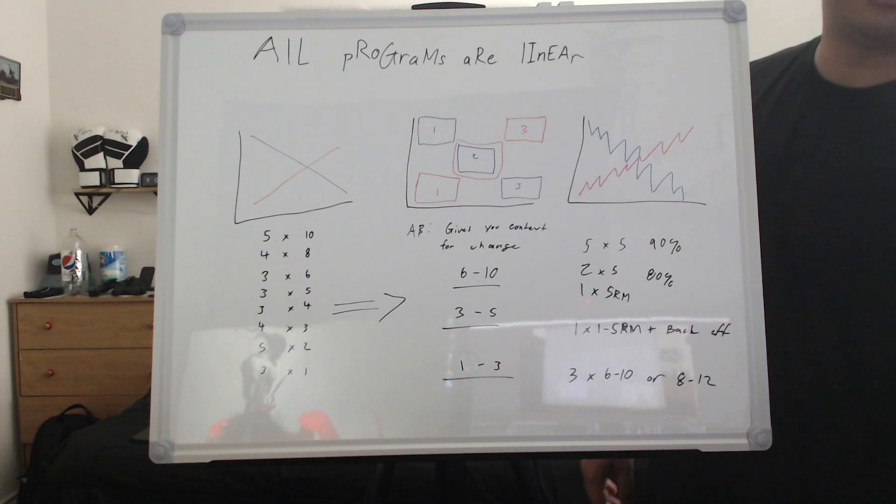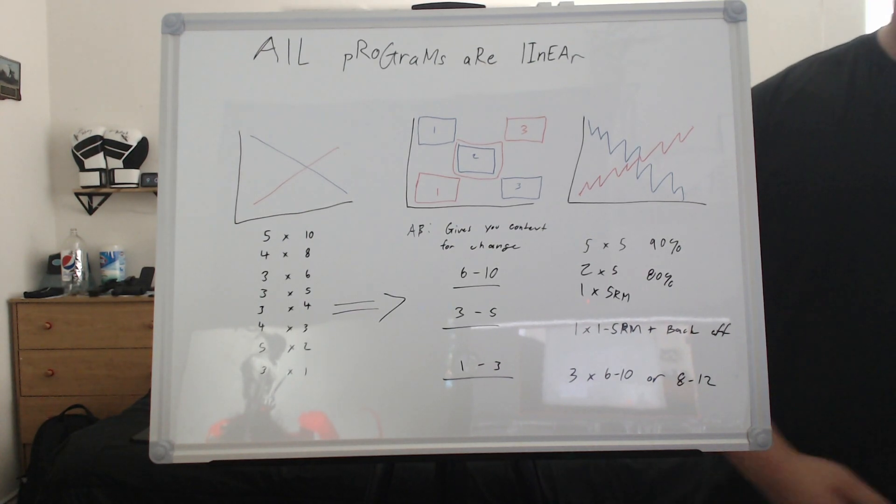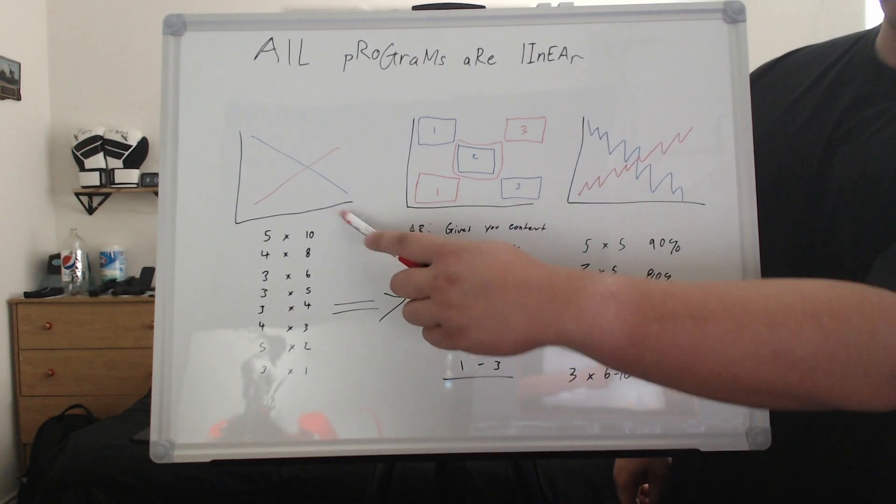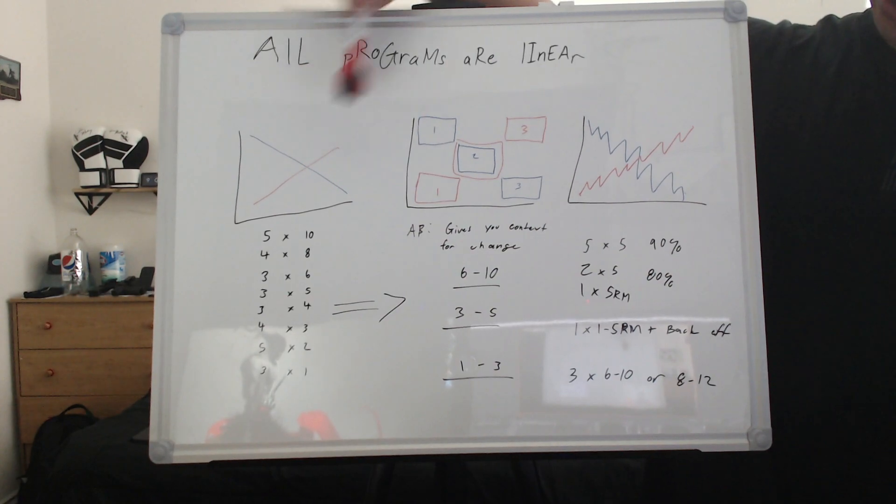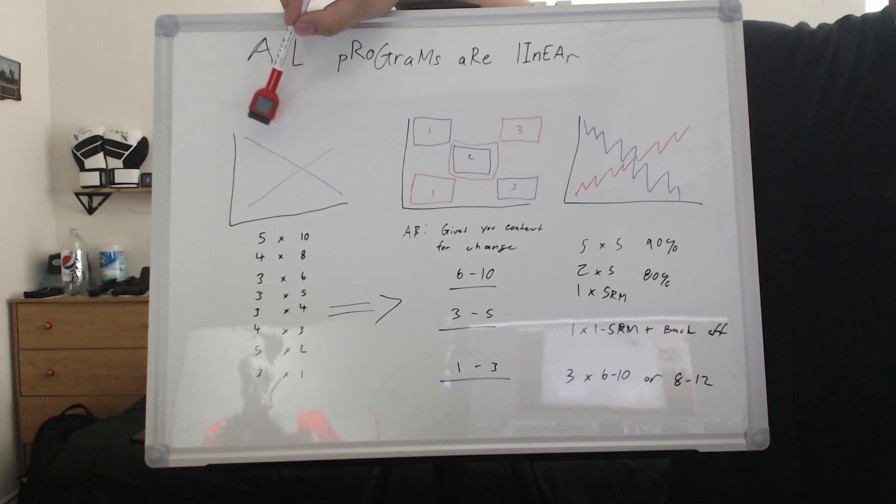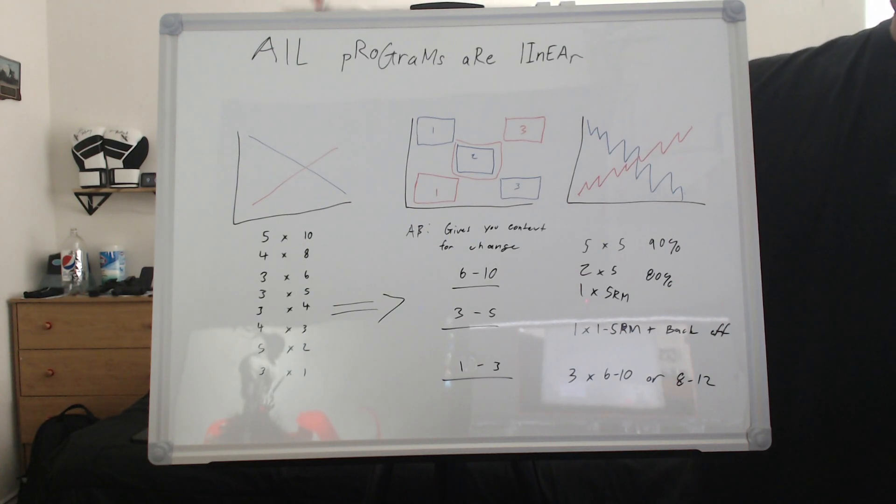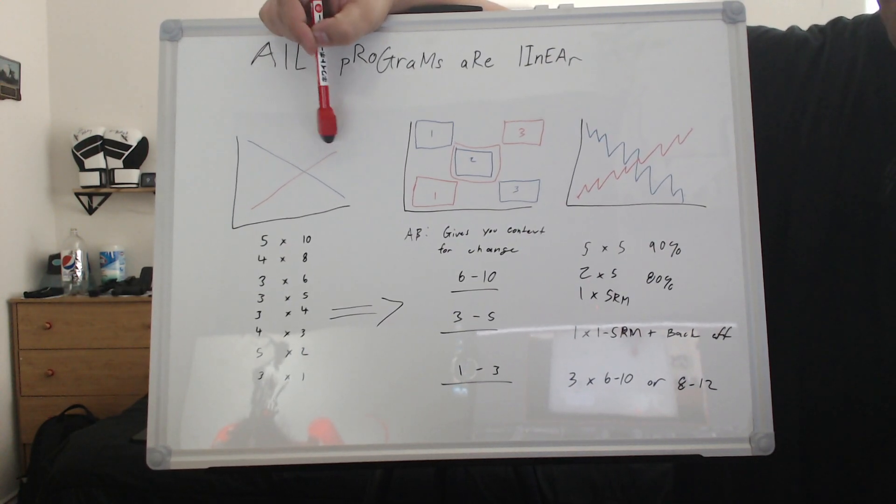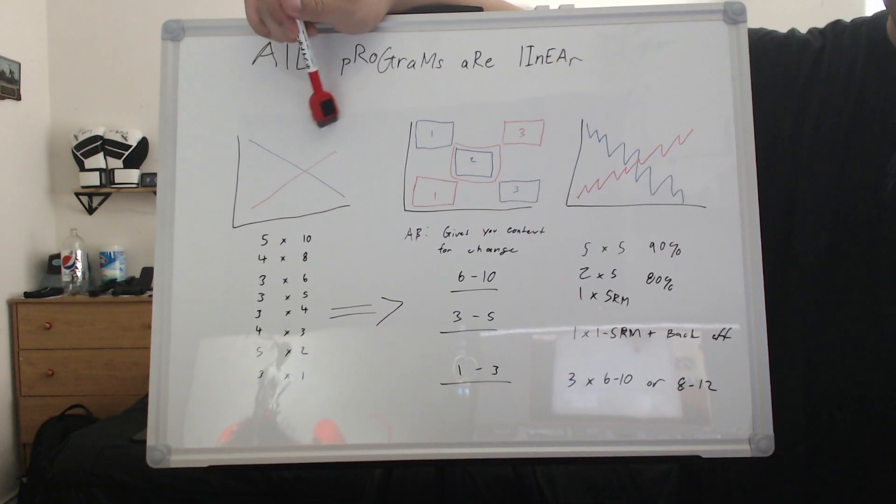The reason why novices and linear progression gets a bad name is just because they don't manipulate anything beyond weight. If you only change the weight on the bar every single week, I think that that is an unsustainable way to train long term. So let's kind of go over the first graph. We're looking at the linear, like a straight up, honest to God, standard linear progression.